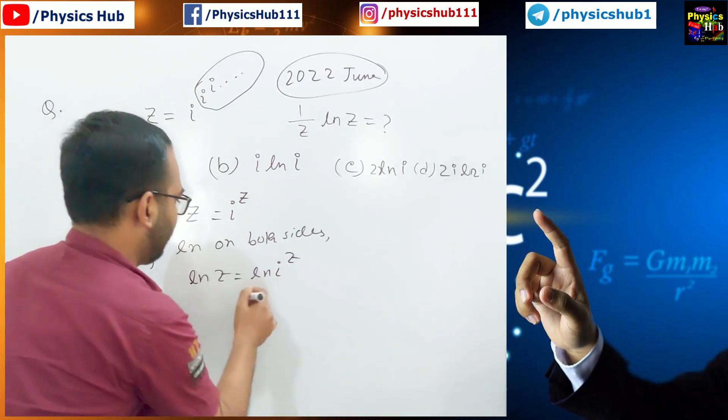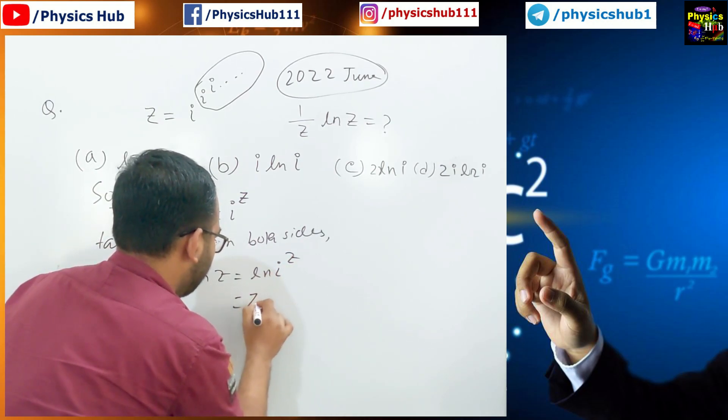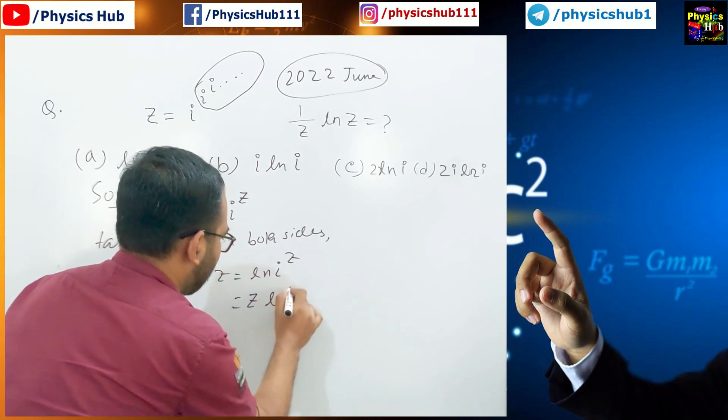Now from the property of logarithm we can bring this z here. So this becomes z ln i.